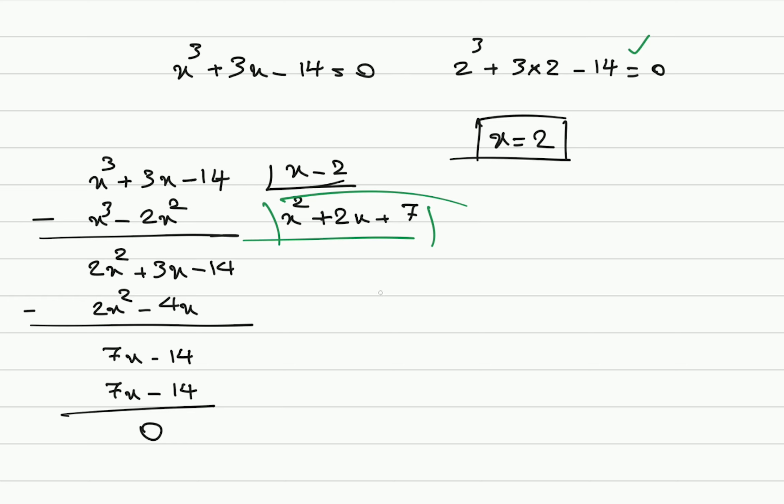So, we can say x cube plus 3 times x minus 14 is equal to x minus 2 times x squared plus 2 times x plus 7. So, we found one answer, which was x equals 2.